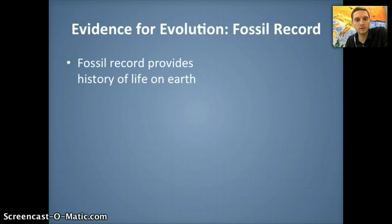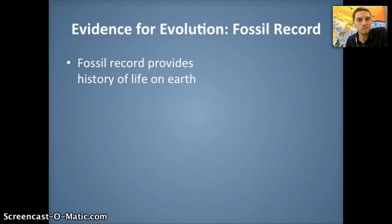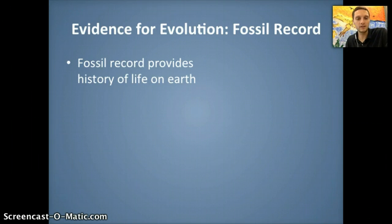One of the first pieces of evidence we can draw on is fossils. Fossils provide a record — a history — of life on Earth. Through a number of advances, we can actually determine the age of fossils. This would be carbon or radiometric dating, and we can use these techniques to find an approximate age of different fossils or rock layers to better understand how old something is.